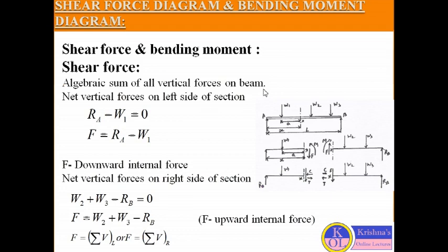If we talk about the bending moment, so bending moment is the algebraic sum of the moment of all the forces acting on the beam. Now let us consider this beam — a simply supported beam AB, supported at the ends by reactions, subjected to a number of vertical loads W1, W2, and W3 acting vertically downward.